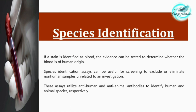So if a stain is confirmed as blood, now we have to find its origin — whether it is of human origin or of animal origin. The evidence can be tested to determine whether the blood is of human origin.